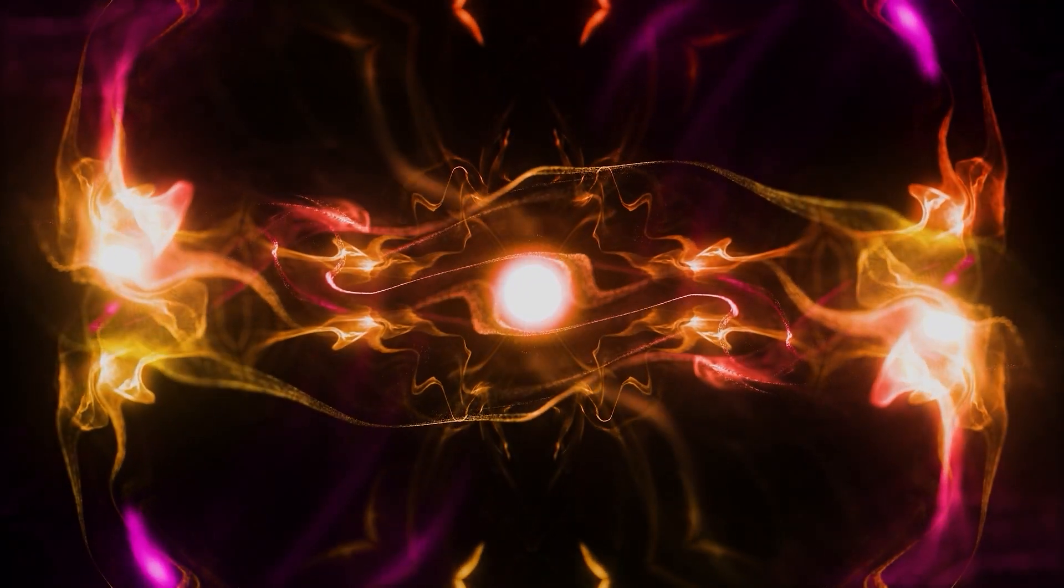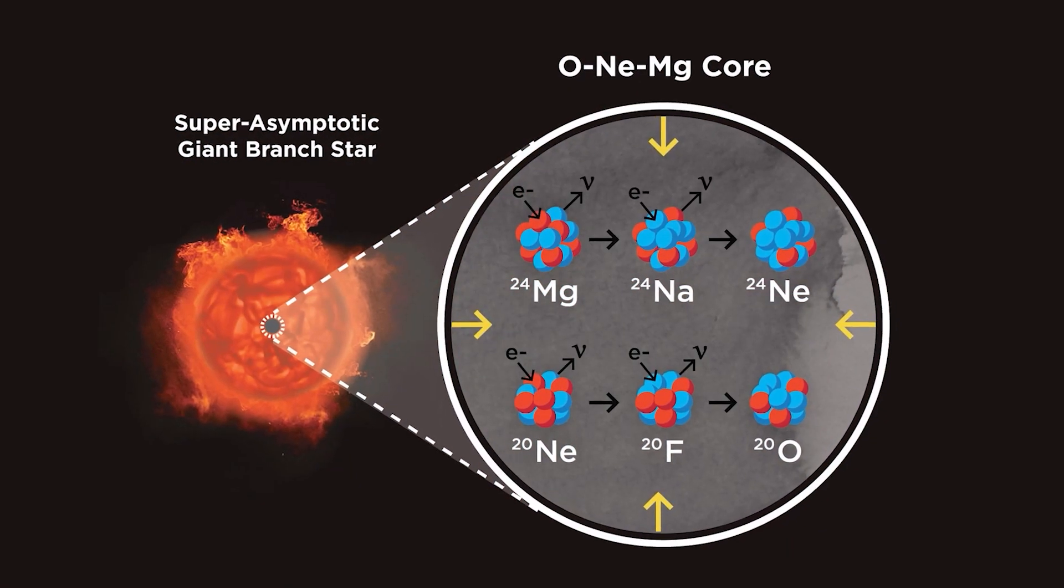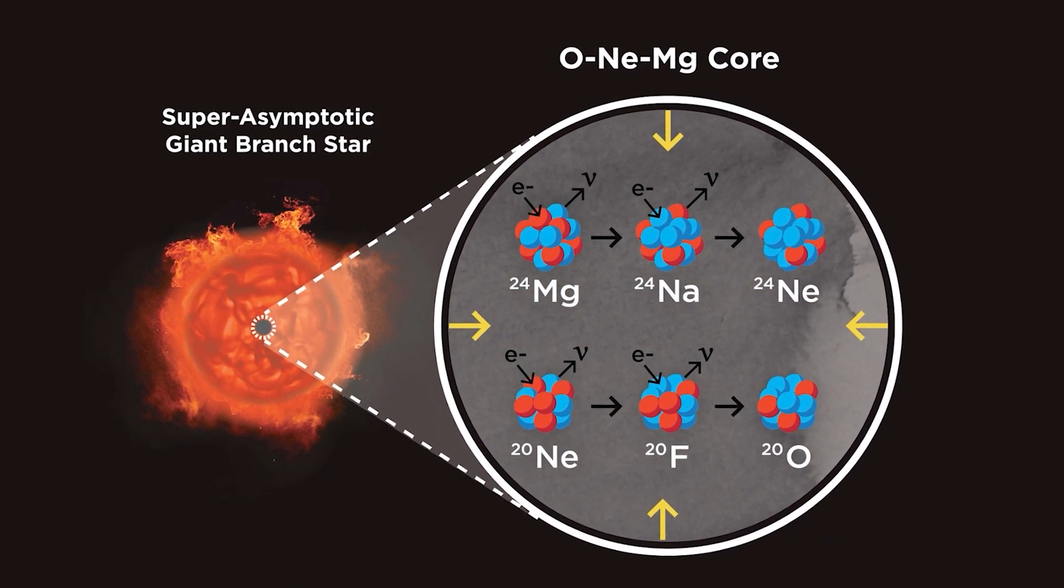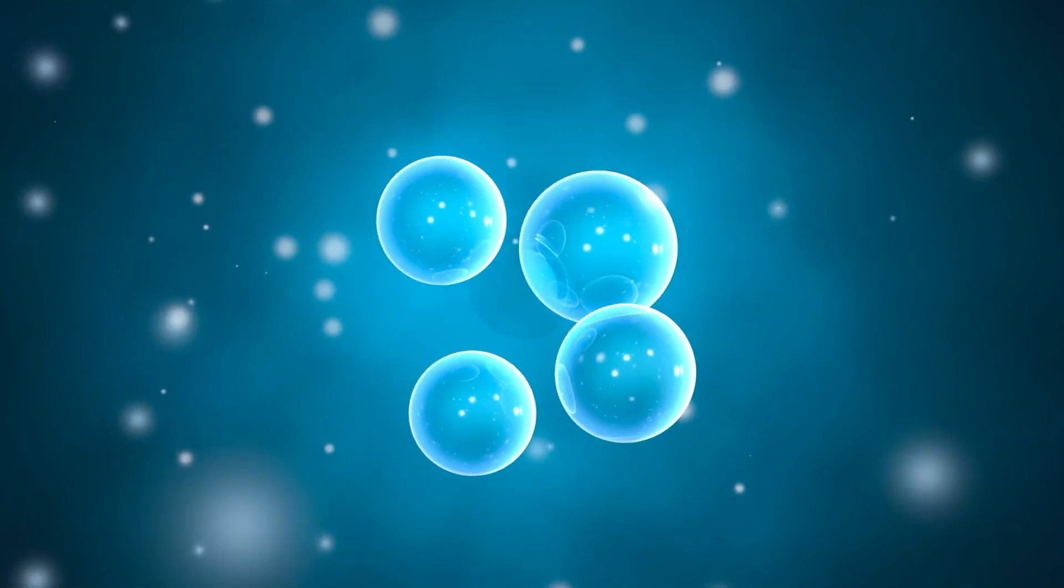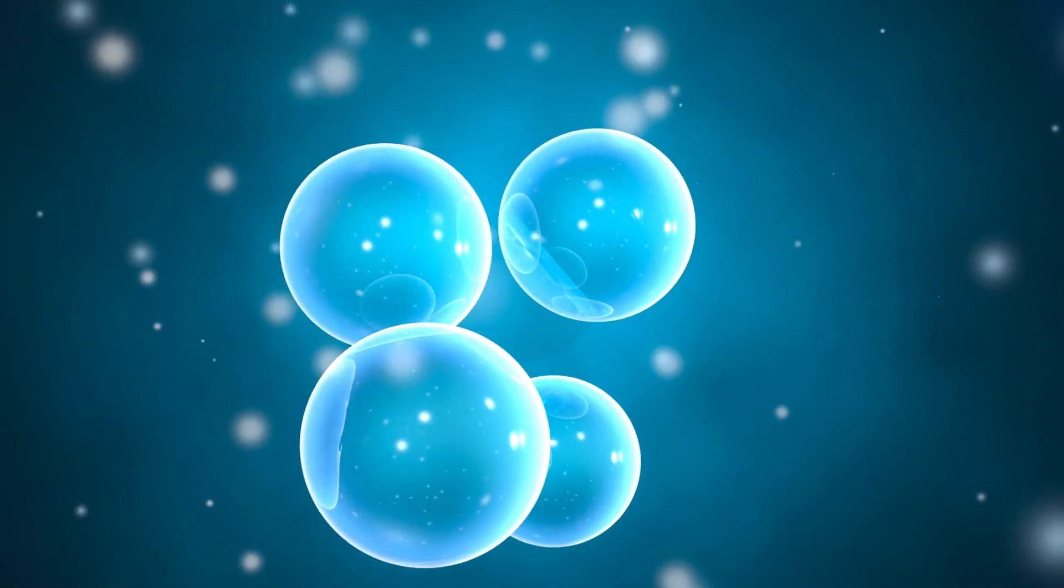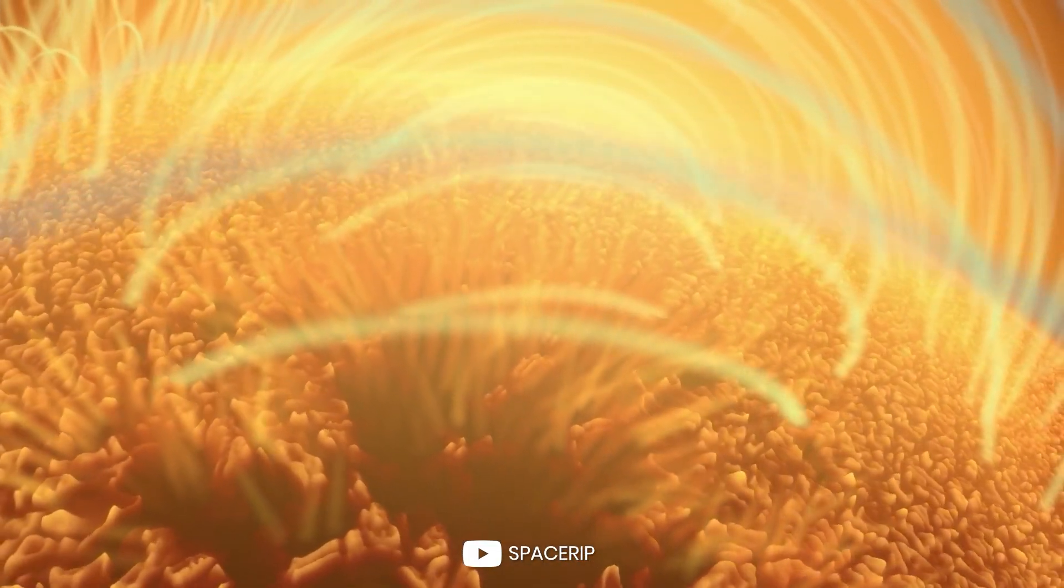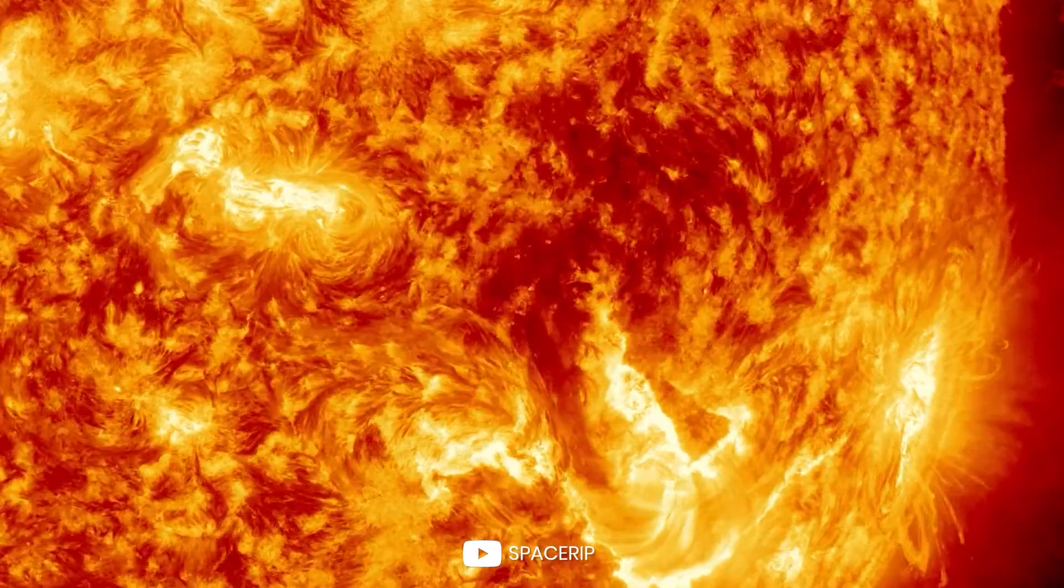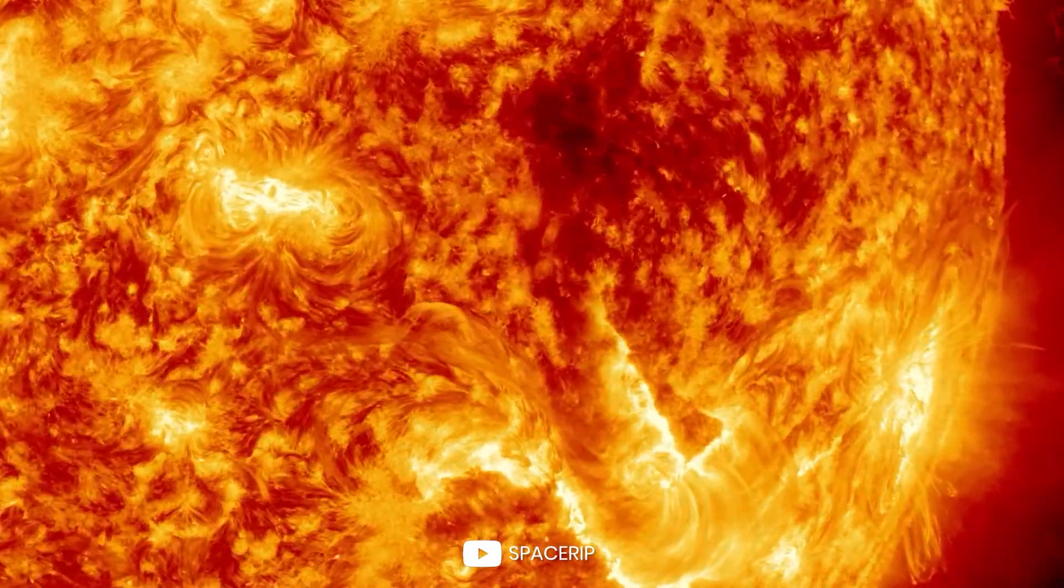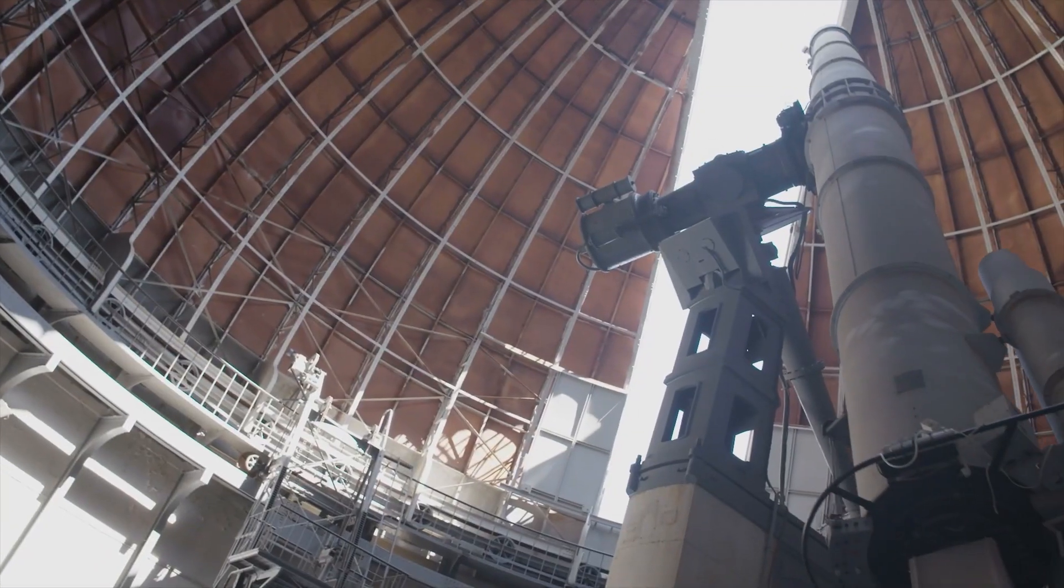In an electron-capture supernova, some of the electrons in the oxygen-neon-magnesium core get smashed into their atomic nuclei, or electron-capture. This removal of electrons causes the core of the star to buckle under its own weight and collapse, resulting in a massive explosion. But recently, another new kind of supernova was discovered.